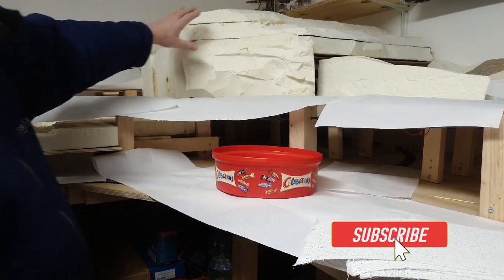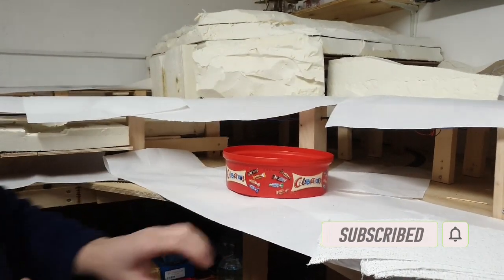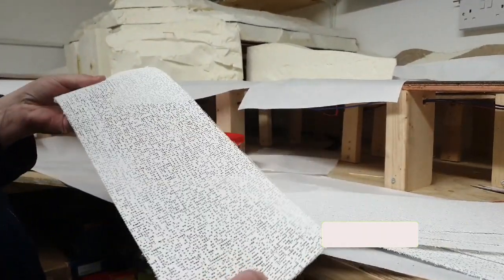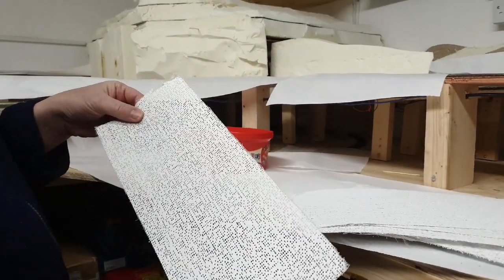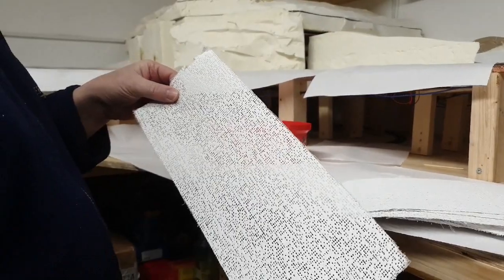So I've cut away some of the Sellatex into the shapes I want. Now we're going to start covering it with the plaster cloth. This is the cloth here I'm using. I got a big box of it off eBay. It's about 80 meters in length for about 30 sterling.